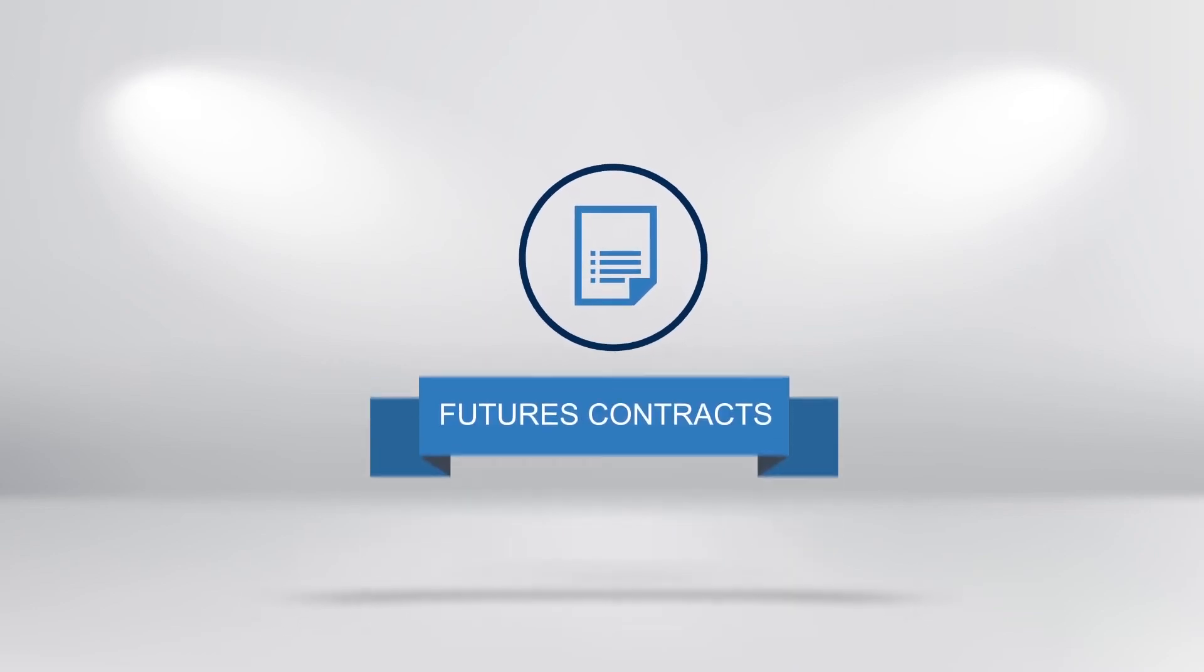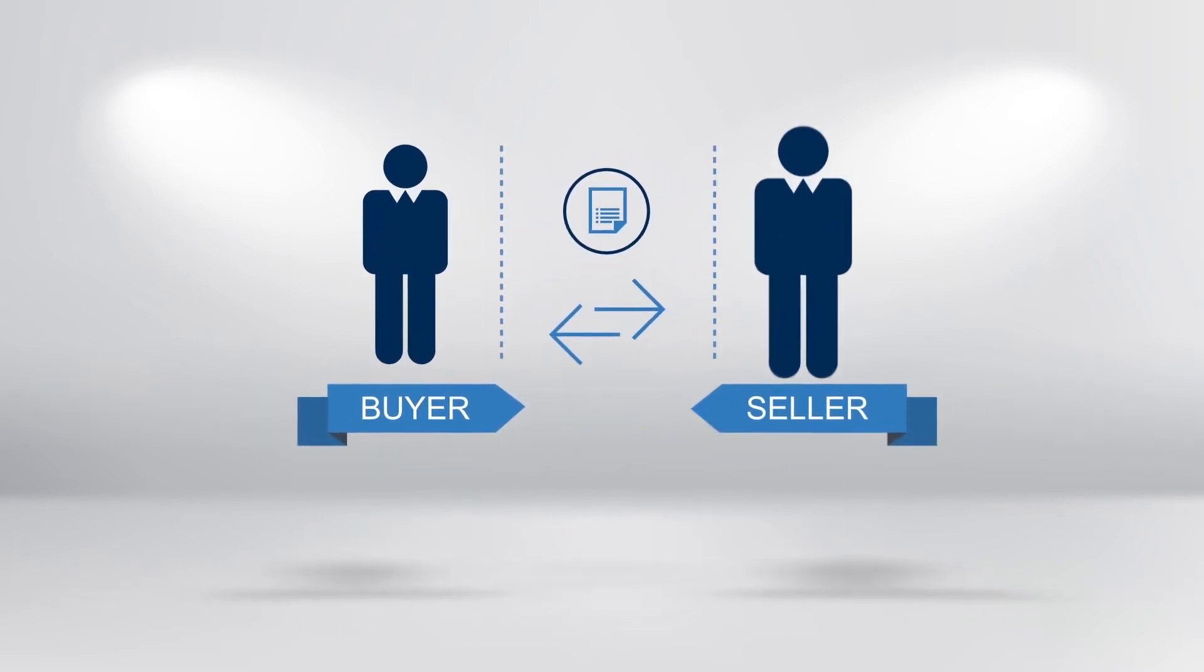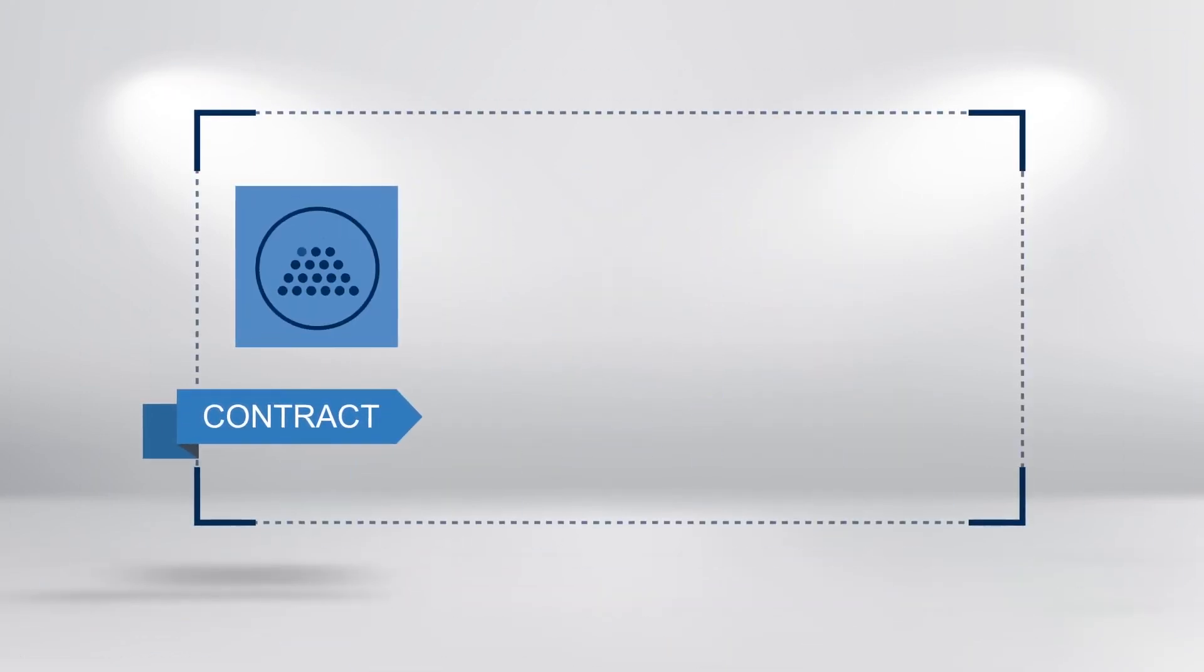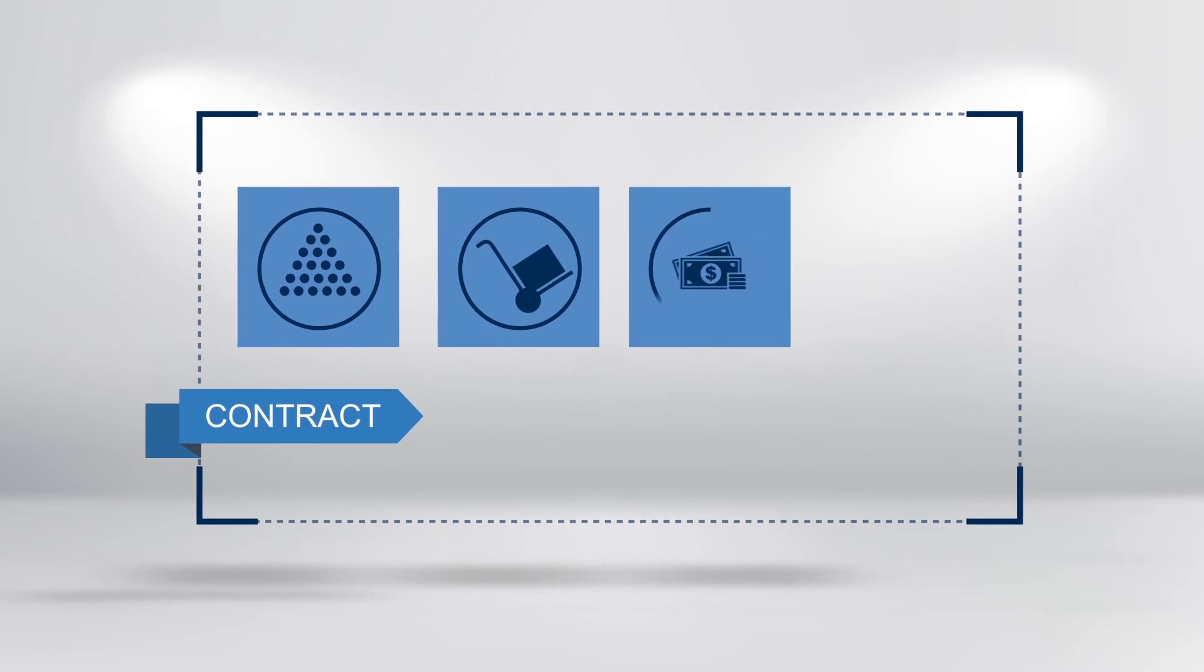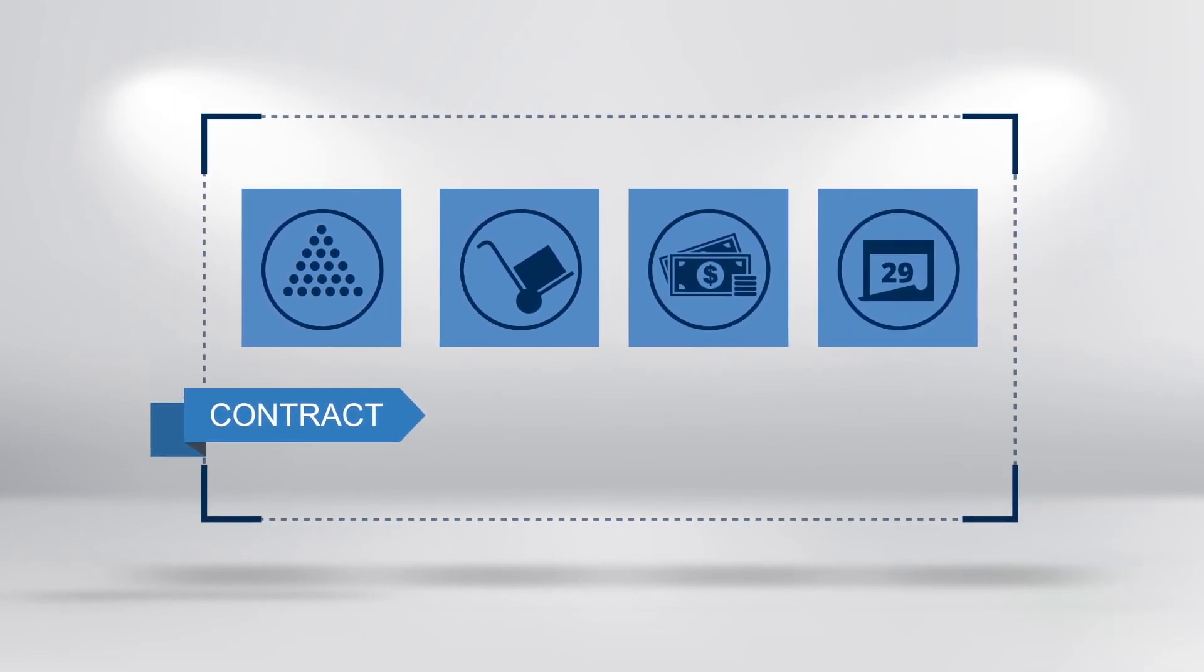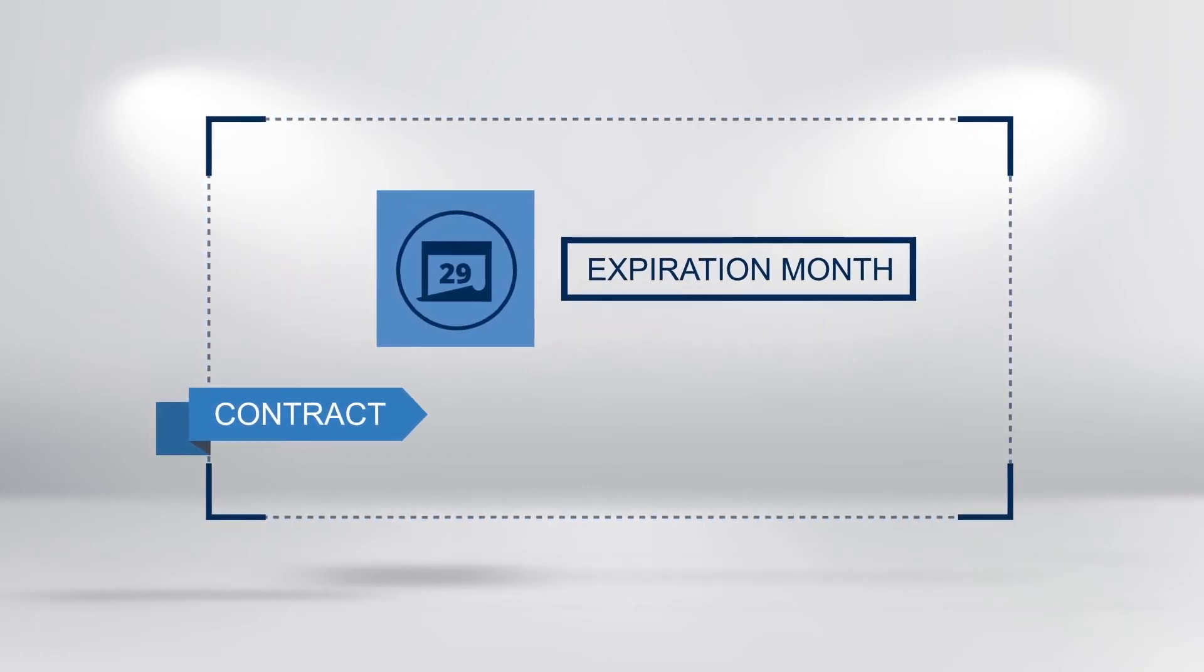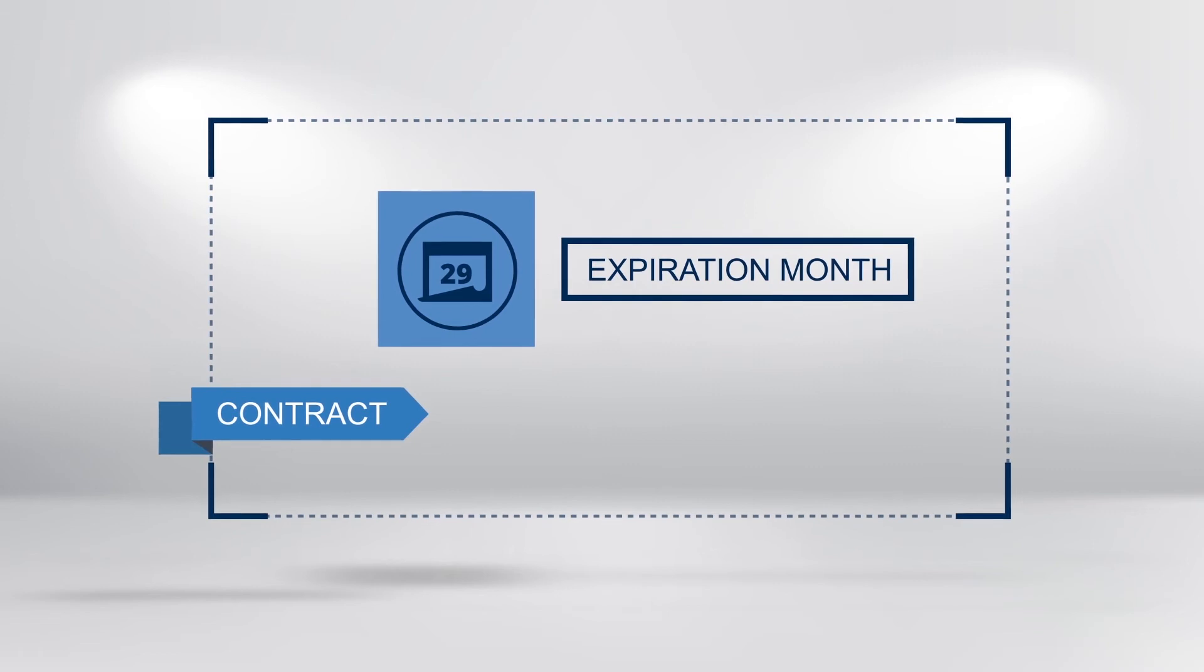So we understand that futures contracts are agreements between a buyer and a seller. The contract will specify the contract units, the delivery, the monetary value and the last trading day, among other details. The delivery month, also known as an expiration month, depends largely on the contract.